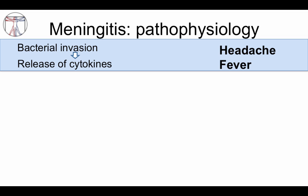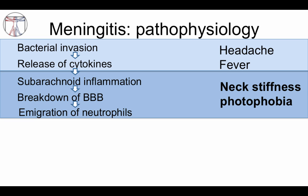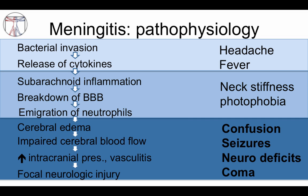How do you correlate the pathophysiology with the clinical symptoms? First, bacterial invasion into the CSF causes release of cytokines, producing early headache and fever. As subarachnoid inflammation increases, there is breakdown of the blood-brain barrier with neutrophil influx, causing neck stiffness and potentially photophobia. As the process progresses, cerebral edema develops, blood flow is impaired due to vasculitis, intracranial pressure increases, and infarction and focal neurological injury can occur — leading to confusion, seizures, neurologic deficits, coma, and even death.